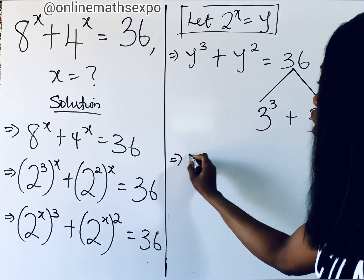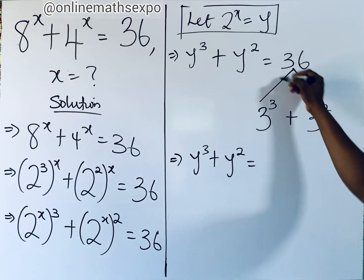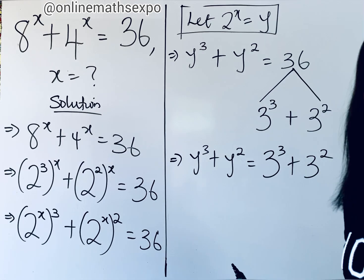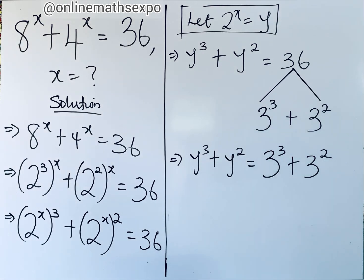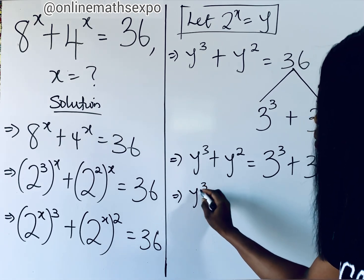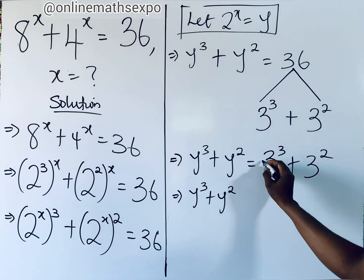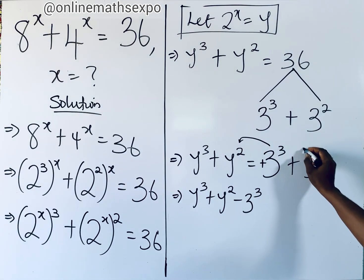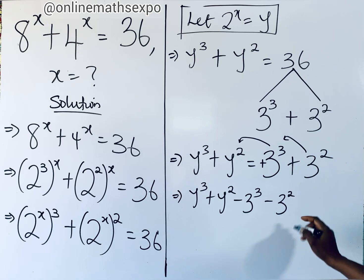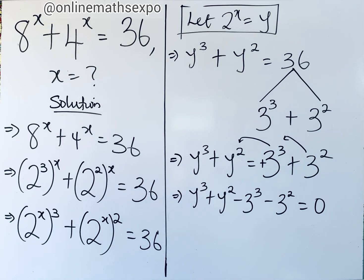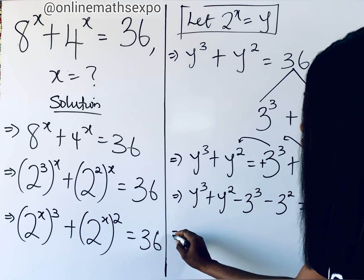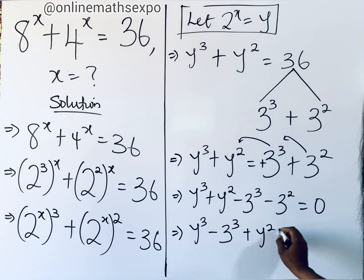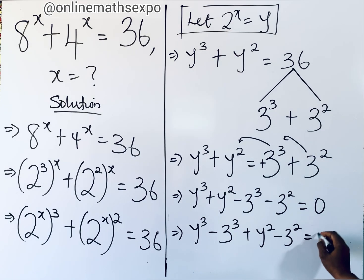So we now have y cubed plus y squared equals 3 cubed plus 3 squared. We move all values to the left side by subtracting. Collecting like pairs gives us y cubed minus 3 cubed plus y squared minus 3 squared is equal to 0.